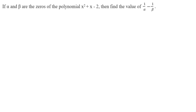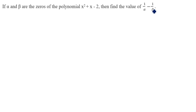Hi friends, welcome to my channel Excellent Ideas in Education. Today we are going to learn about a polynomial problem. This is a very important problem. If alpha and beta are the zeros of the polynomial x squared plus x minus 2, then find the value of 1 by alpha minus 1 by beta.